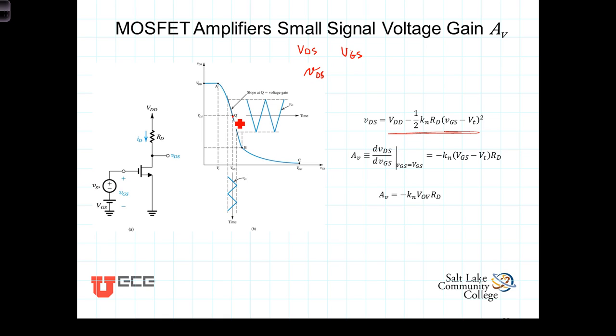We're going to define the gain of this amplifier configuration as being the derivative of this expression, v_DS, with respect to v_GS, evaluated at the bias point, or evaluated at v_GS equals capital V, capital GS.